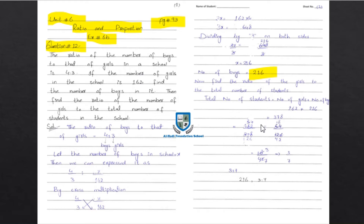Now we need to find the ratio of girls to the total number of students. We write the number of girls and total number of students. 162 divided by 378. We need to find a common factor that divides both numbers.